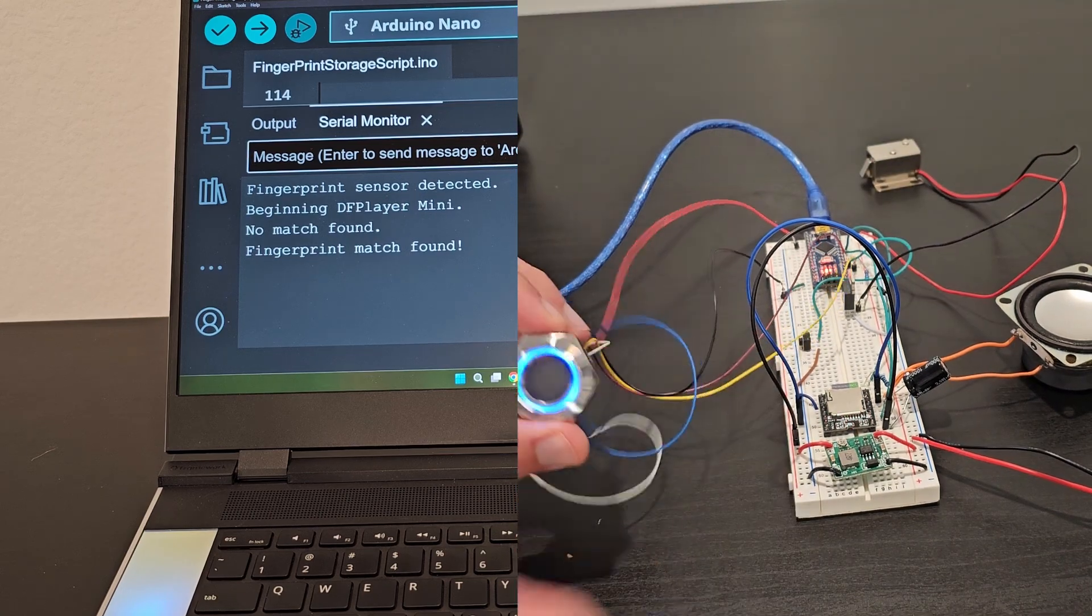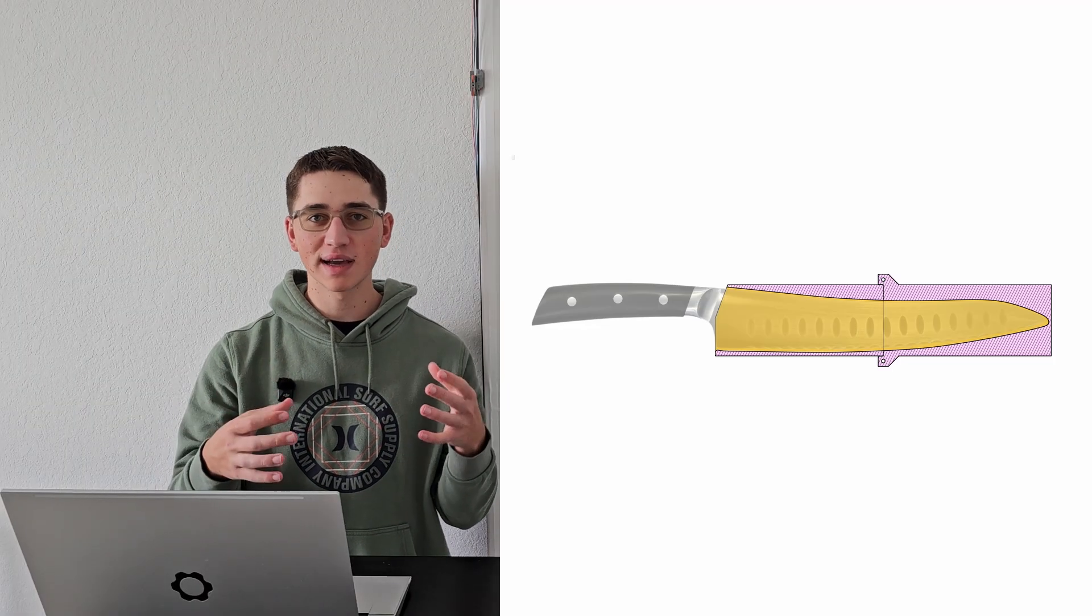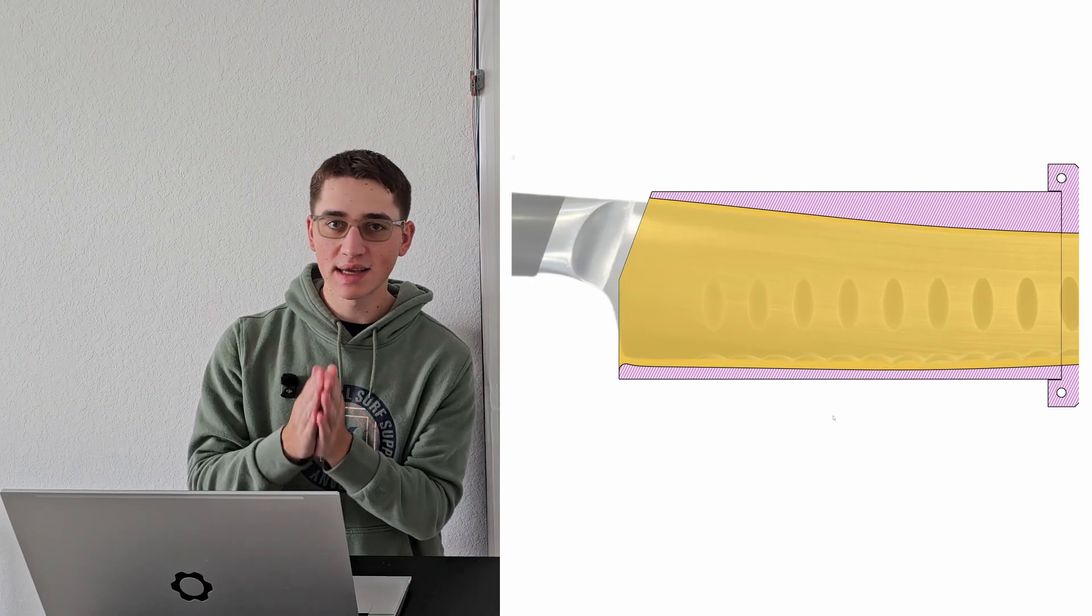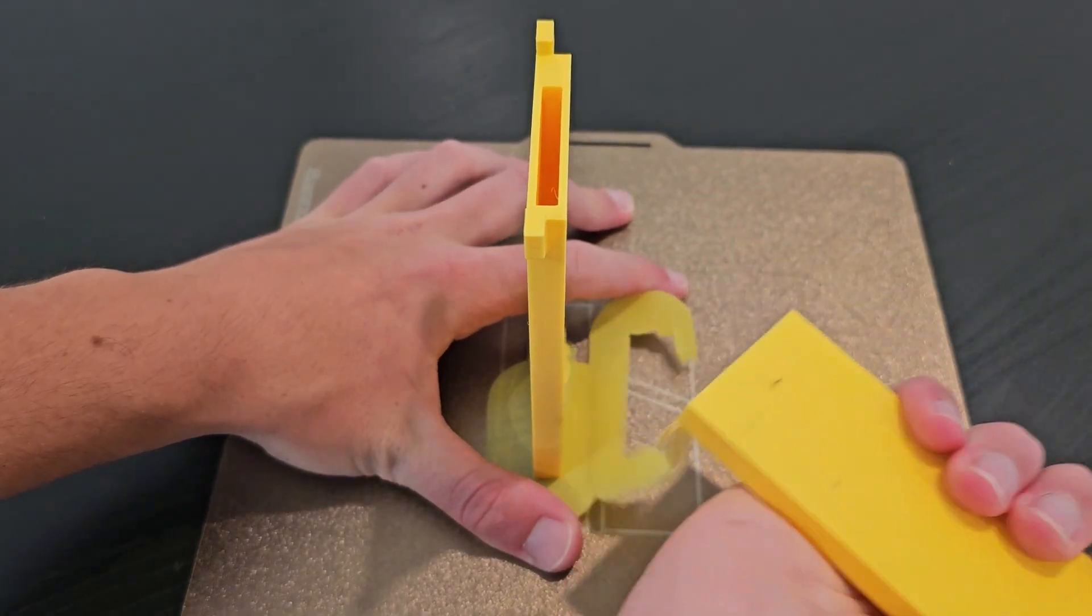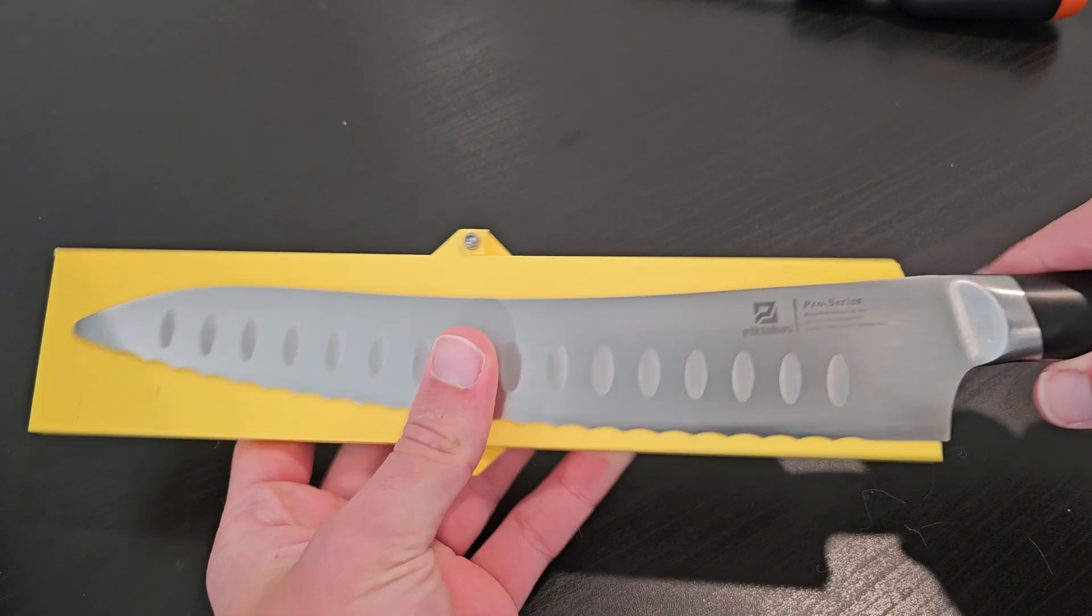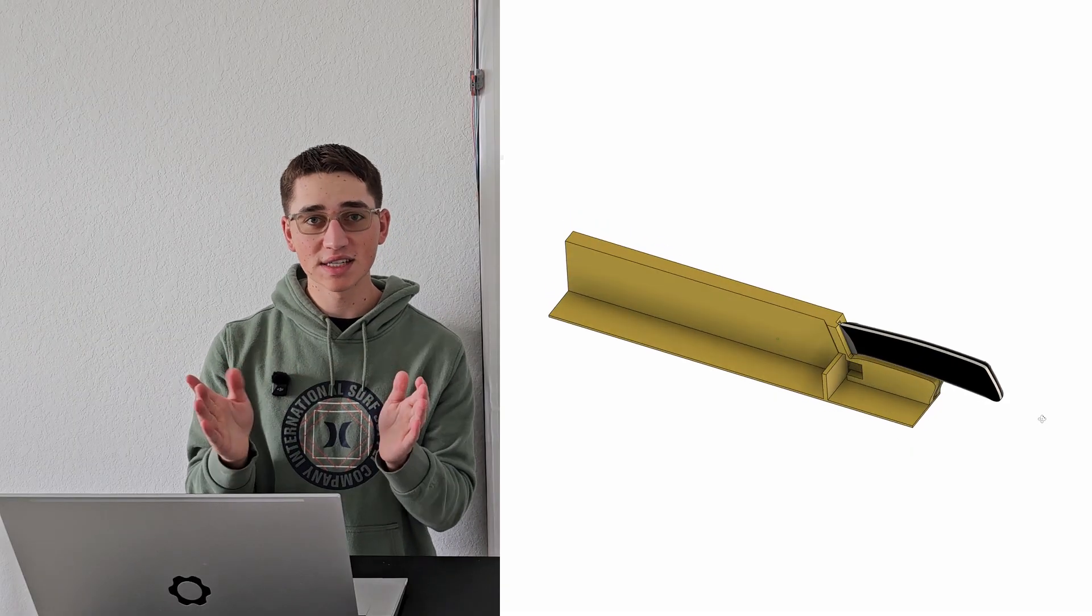Now we have the electronics together and the code written, but we have nowhere to put anything. So let's design a 3D-printed knife block enclosure that's worthy of the project. I first took a zoomed-in picture of the knife to get a telephoto effect, and then I brought it into Fusion 360, sketched around it, and printed out a little sheet to make sure that my tolerances were all right. It worked surprisingly well with just a bit of wiggle, so I moved on with the rest of the design.